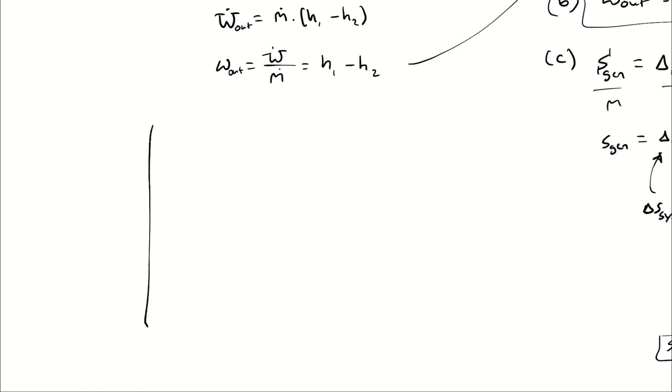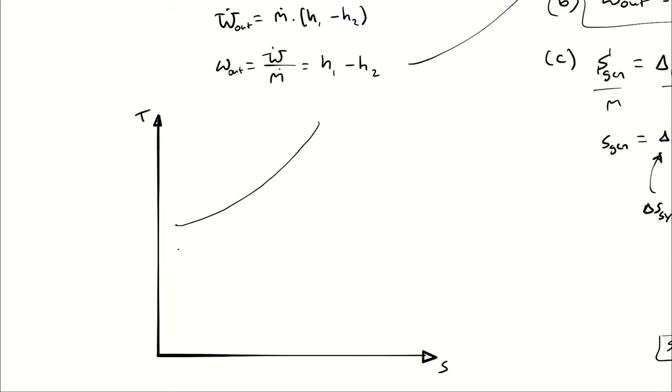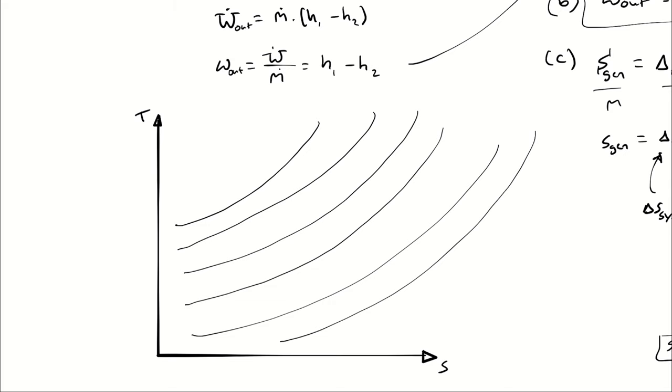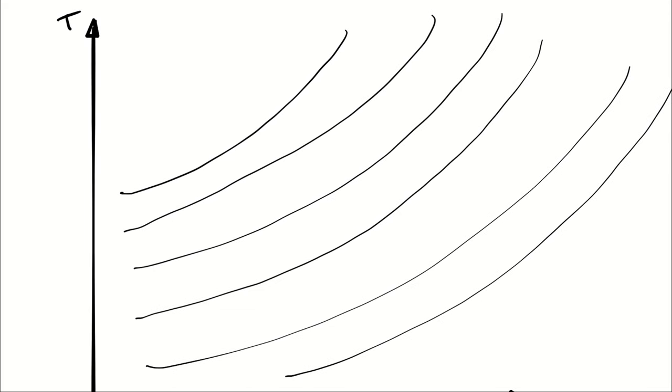Now for part D. TS diagrams are useful for keeping track of efficiency and how it affects our properties, and lines of constant pressure go up and to the right like that, and they go up as the pressure increases.